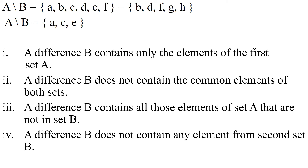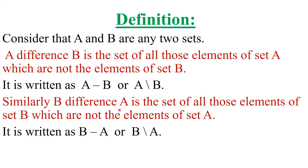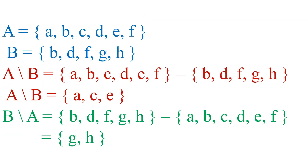Now let us look at the formal definition of difference of two sets. Consider that A and B are any two sets. A difference B is the set of all those elements of set A which are not the elements of set B. A difference B contains all elements of the first set A and none of the elements present in set B. It is written as A minus B or A slash B. Similarly, B difference A is the set of all those elements of set B which are not present in set A, written as B minus A.